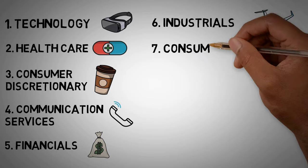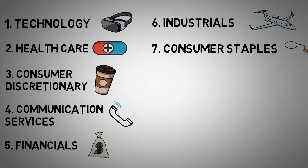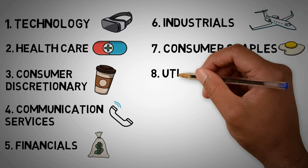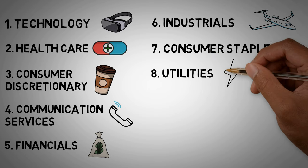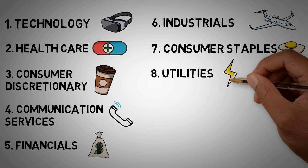Consumer staples is the seventh largest sector, which includes companies such as Procter & Gamble, Costco, and CVS. Number eight is utilities, which are companies like American Electric Power Company, Emerson Electric, and Eversource.